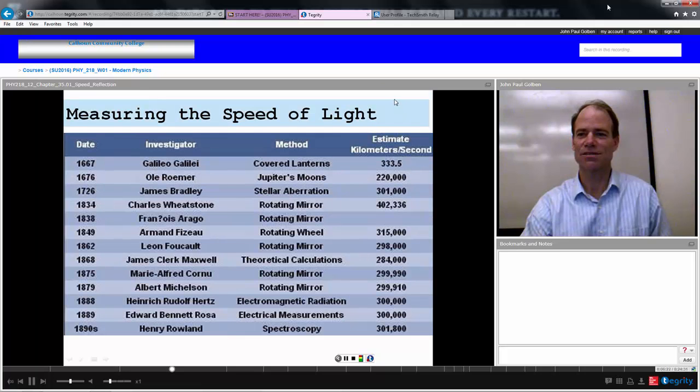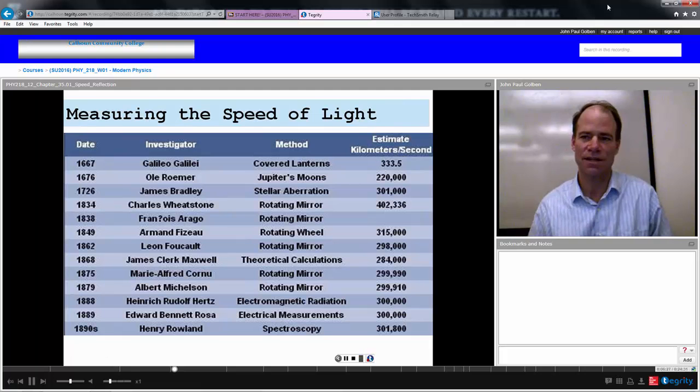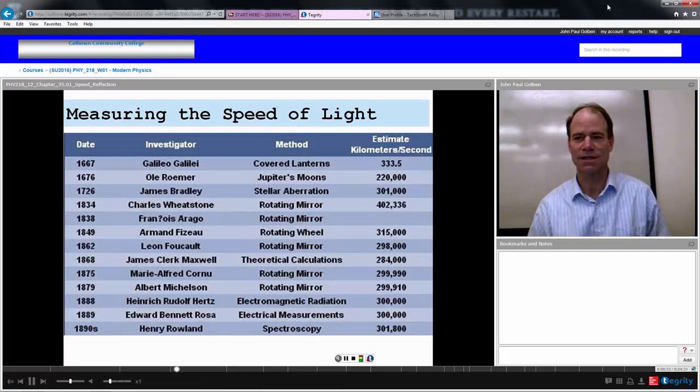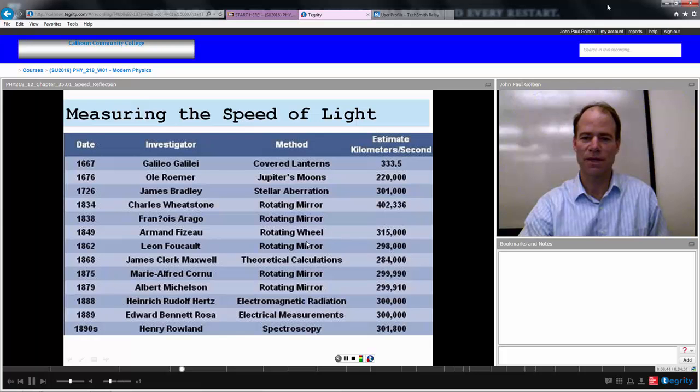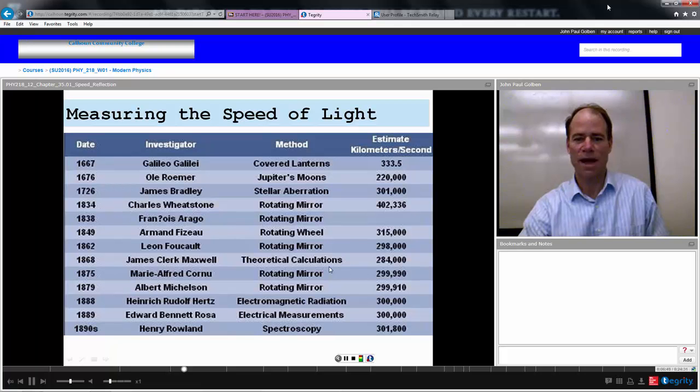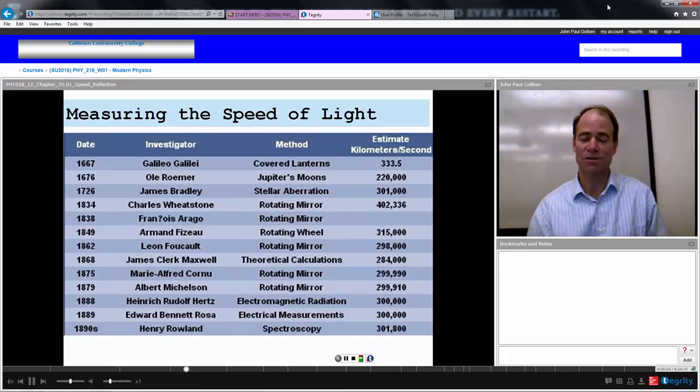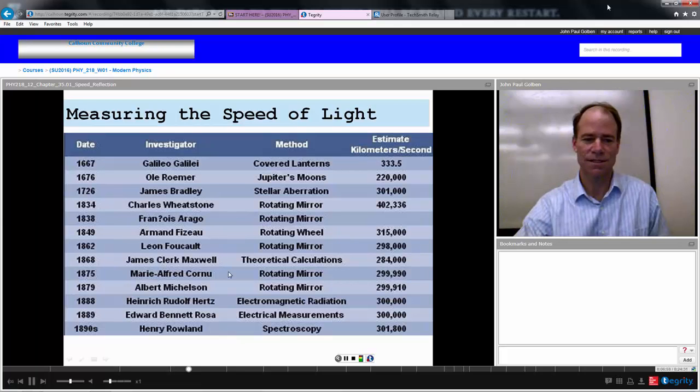So here's a list of many of the measurements of the speed of light. The first one, Galileo Galilei, you have 3 times 10 to the 5 meters per second or 333 kilometers per second. Excellent start, but Ole Rømer came up with a better measurement. And then of course, we got James Bradley based on stellar aberration. Rotating mirror and rotating wheel of Fizeau and Foucault. James Clerk Maxwell, theoretical calculations in 1868, came up with a value very close to 3 times 10 to the 8, you know, 284,000 kilometers per second.